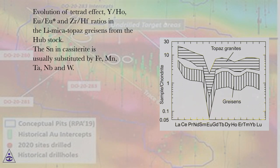Evolution of tetrad effect, Y/Ho, Eu, Eu* and Zr-Hf ratios in the Li-mica-topaz greisens from the Hubstock. The Sn in cassiterite is usually substituted by Fe, Mn, Ta, Nb and W.